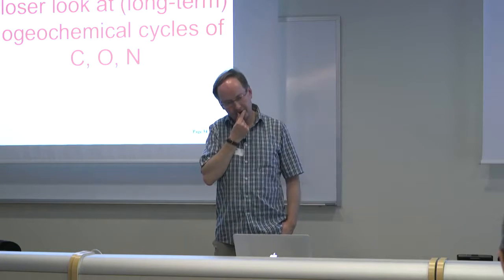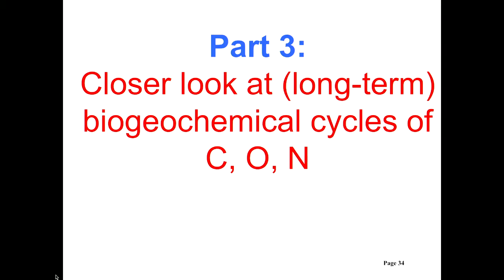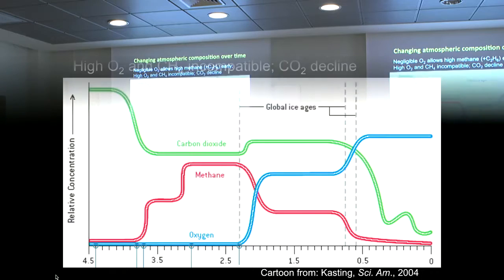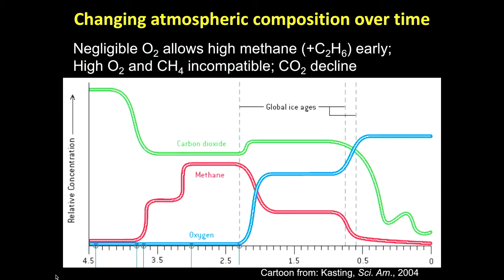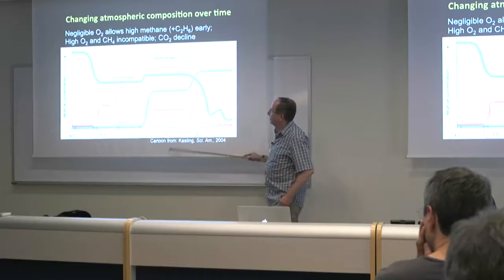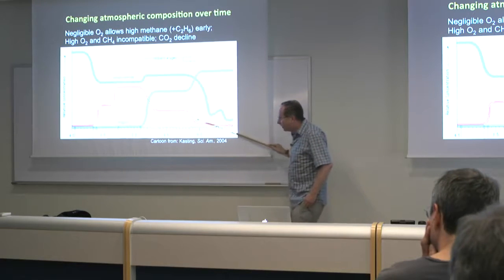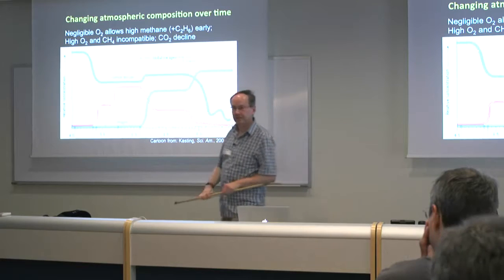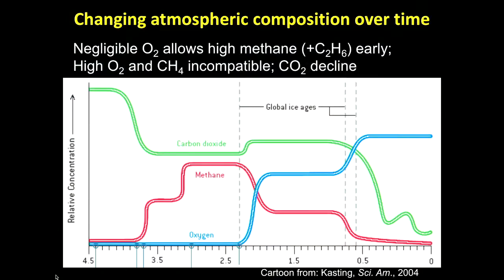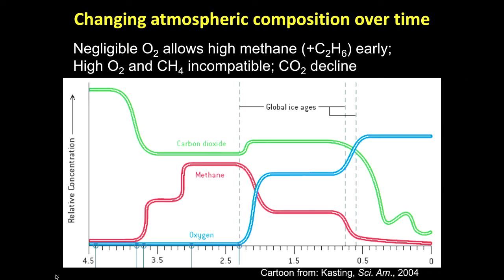Now let's take a closer look at long-term changes in carbon, oxygen, and nitrogen. Oxygen has risen overall; CO2 levels have generally fallen; methane levels would have risen with early life but then fell as oxygen rose because high oxygen destroys methane — those two things are incompatible. Carbon dioxide is very important for habitability. As Stephen talked about, the habitable zone and its edges depend upon a greenhouse water vapor atmosphere assumed to be Earth-like. Let me talk about CO2 — it's controlled on Earth by something called the carbonate-silicate cycle.